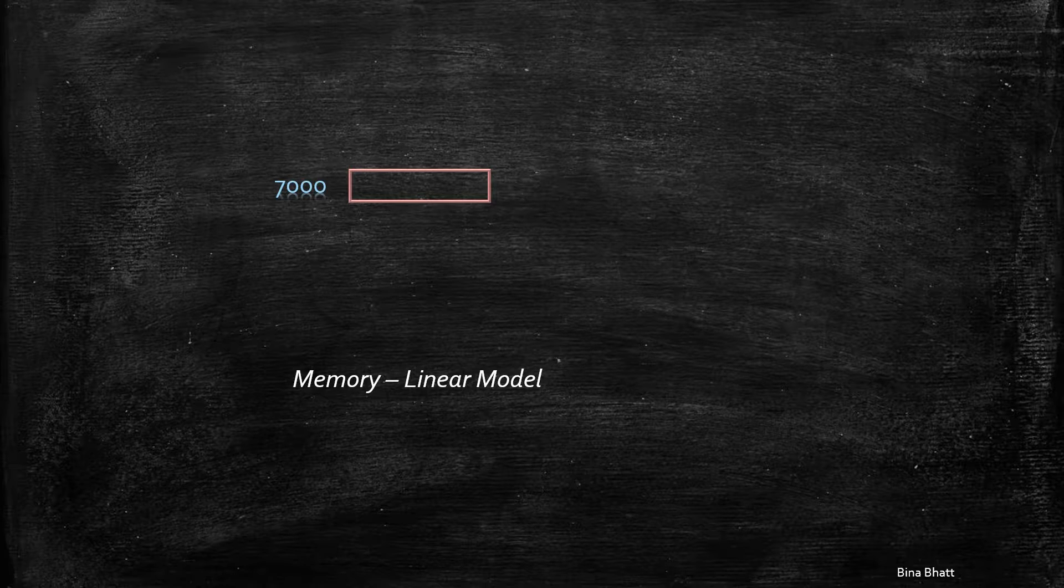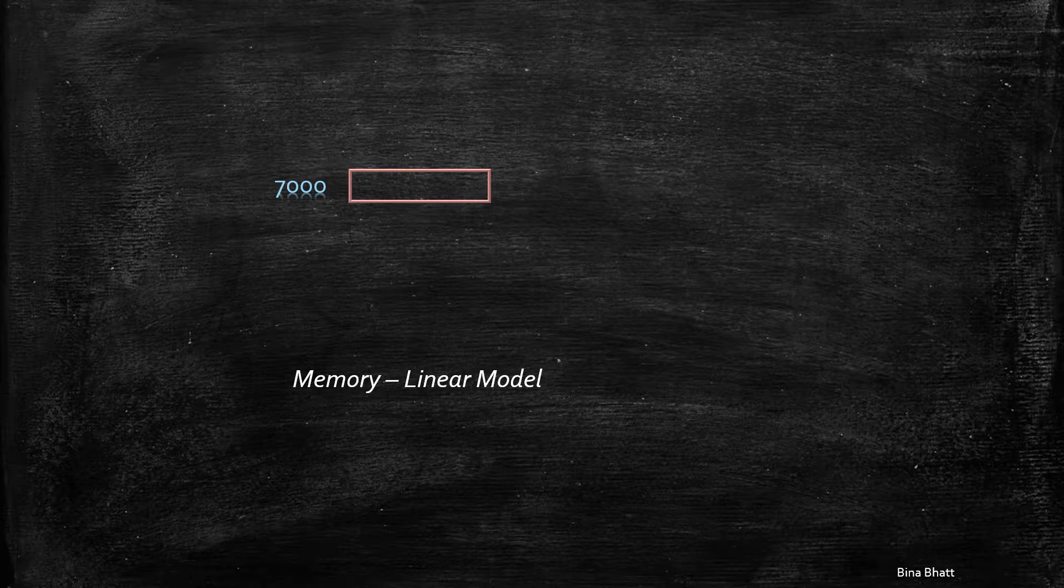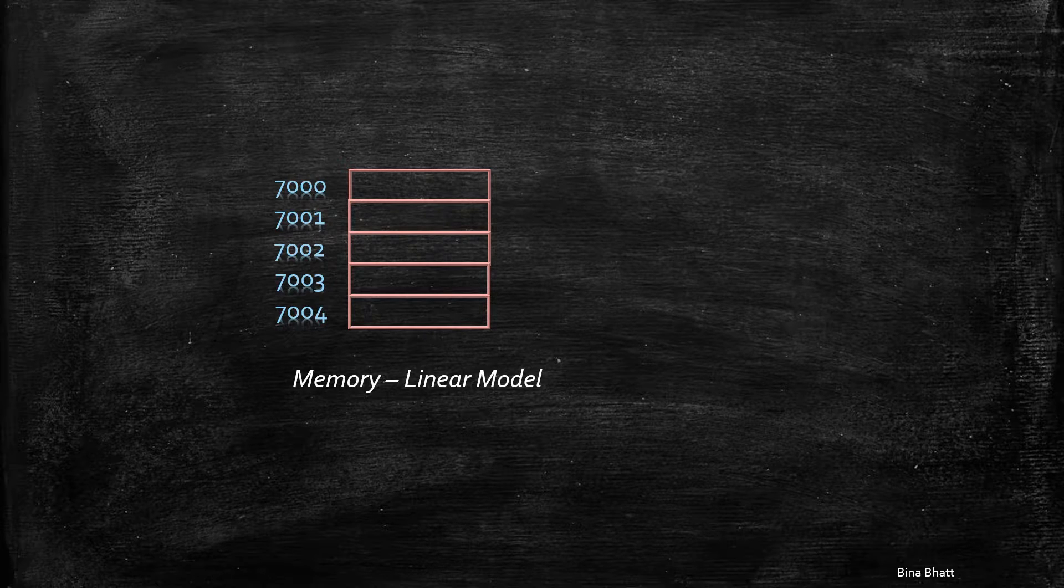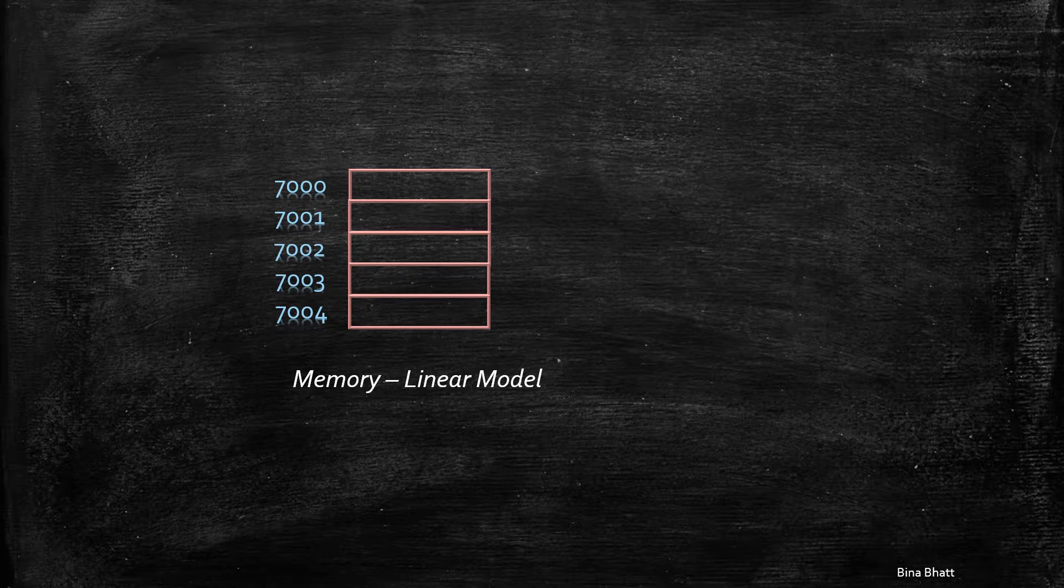For that, let's consider a linear model of the memory. Here, the lowest address is on the top and subsequent higher addresses are added one below the other. This is as per the usual convention.